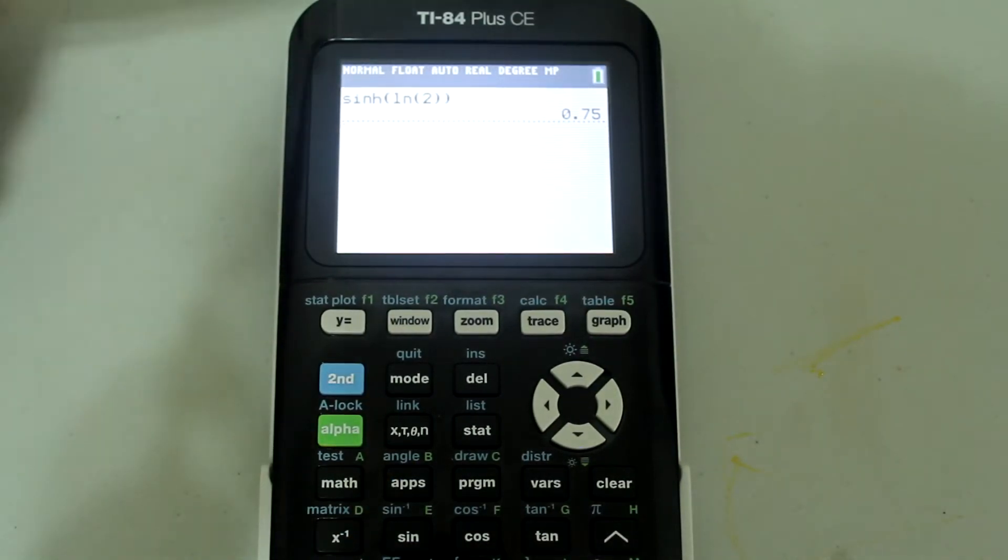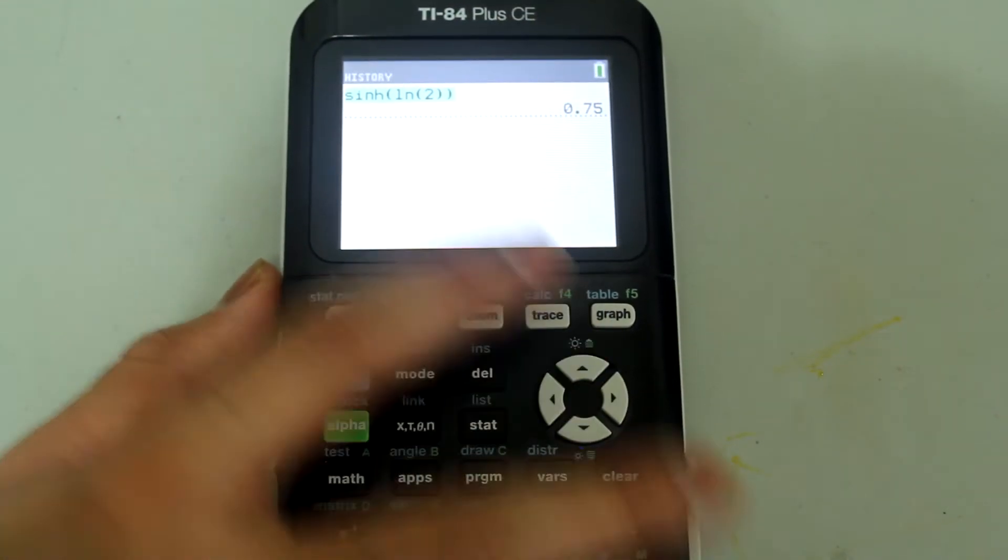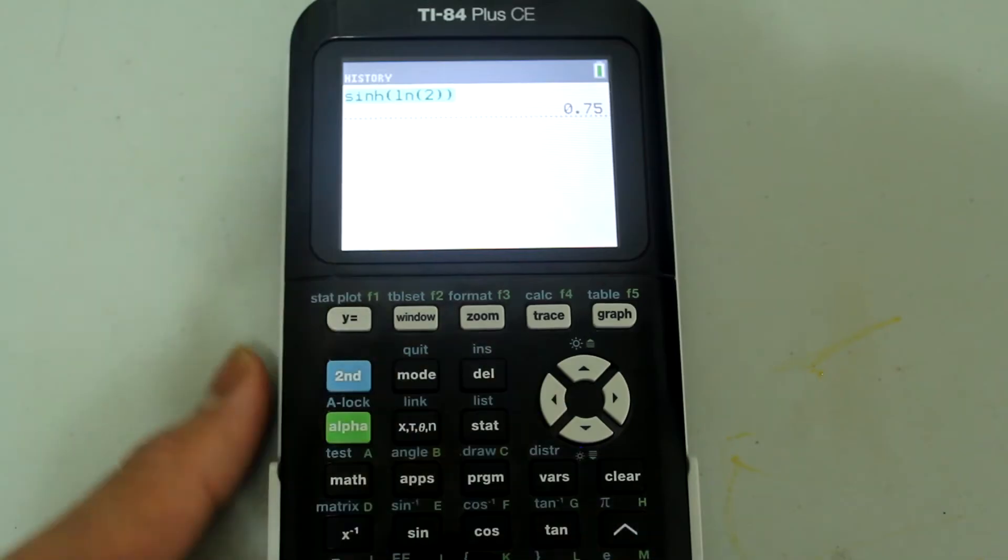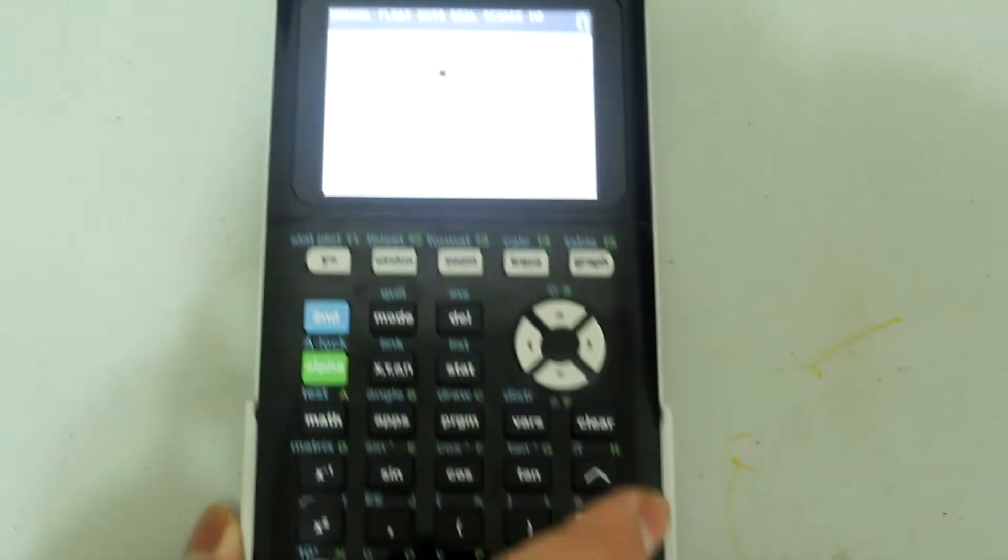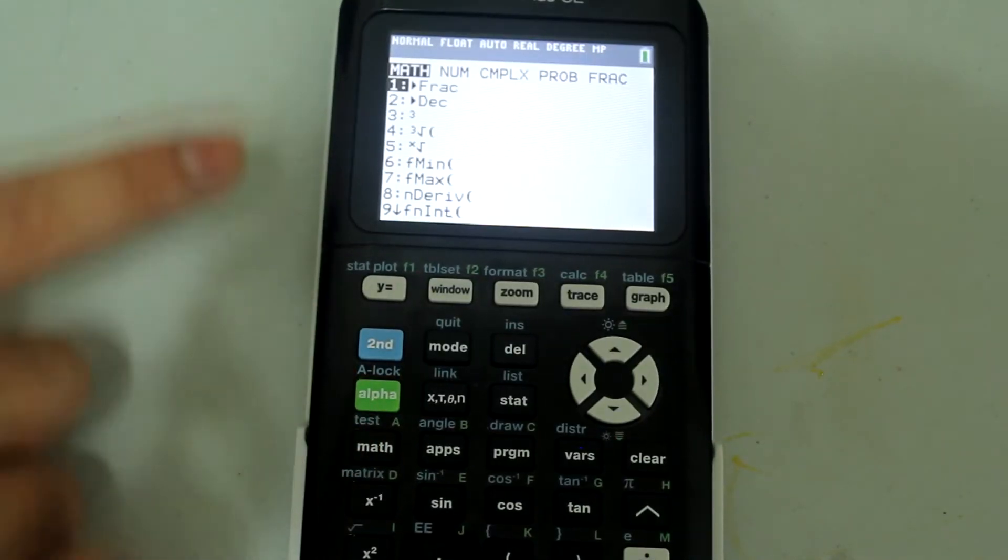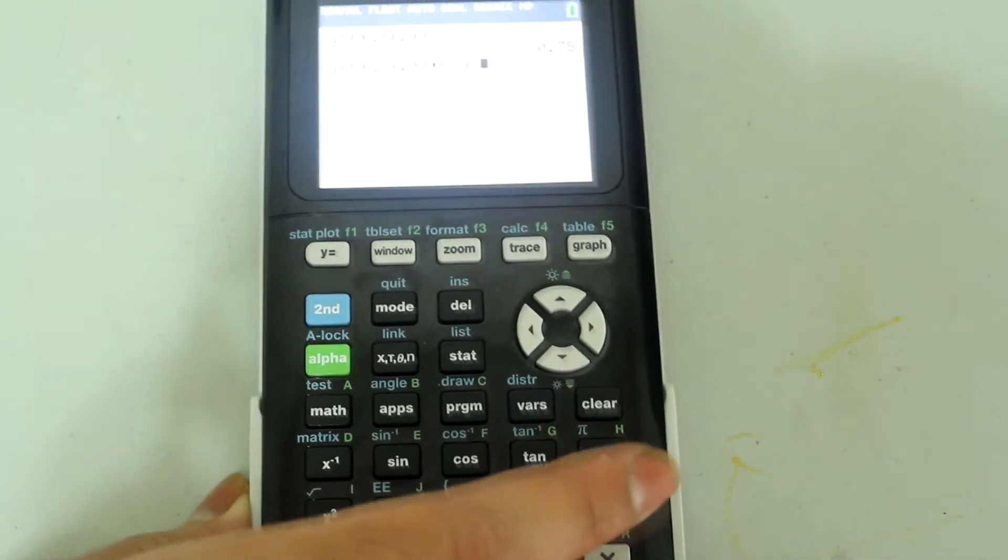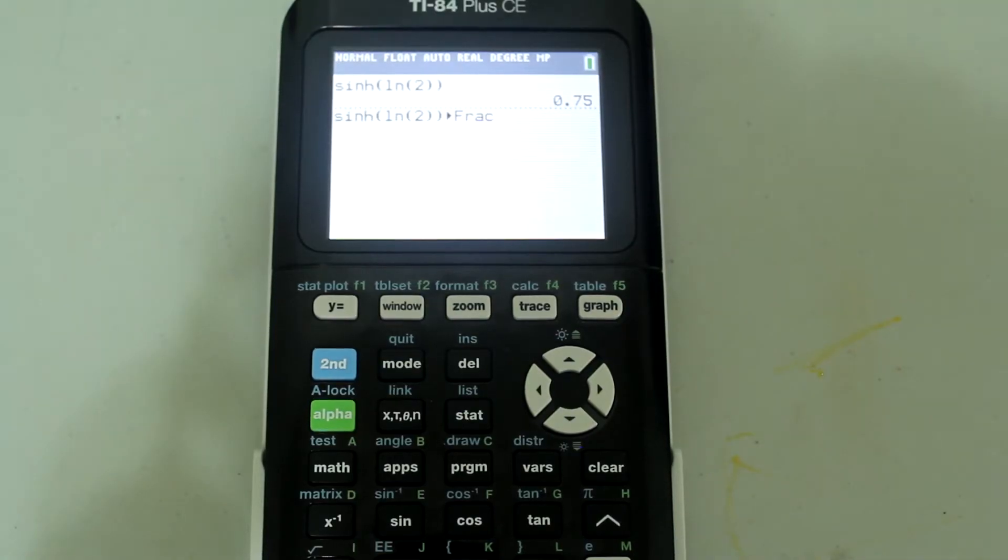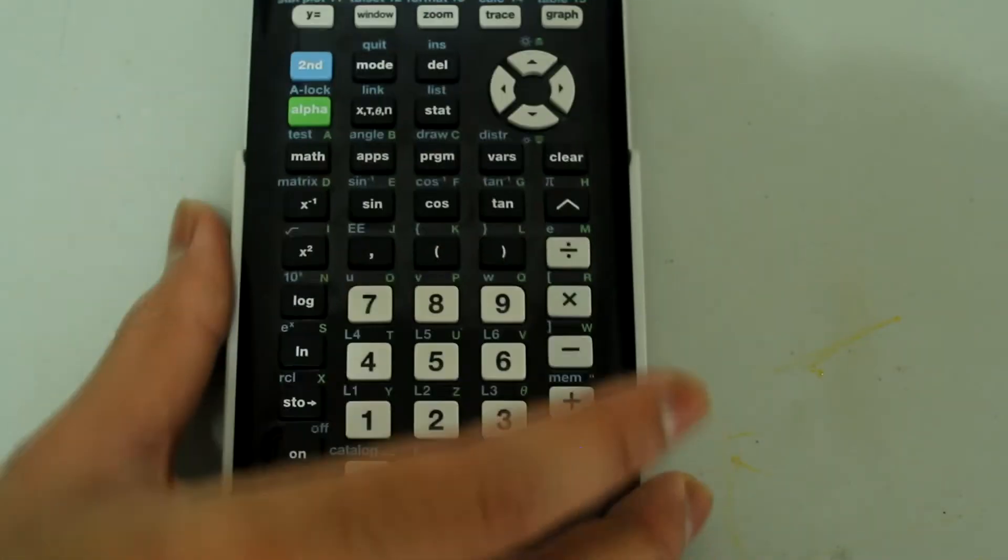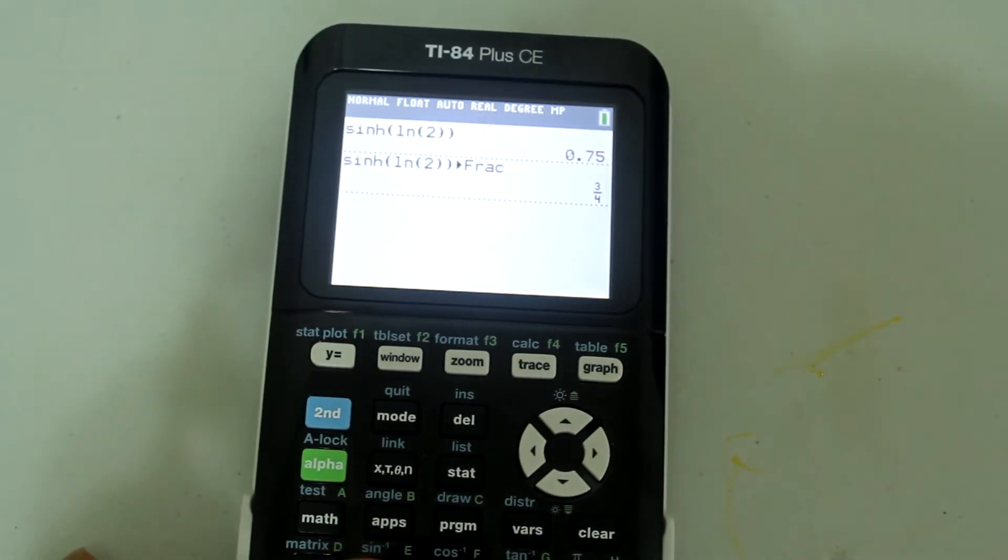If I wanted the answer in fraction form, since this will be a perfect fraction, I'm going to select the previous entry and press Enter. Then I'm going to press the Math button and select the fraction option. This will give me the answer in fraction form if possible. Press Enter, and we get the answer as three fourths.